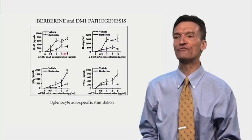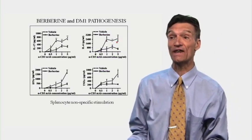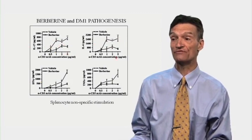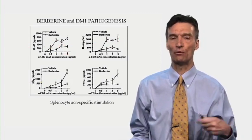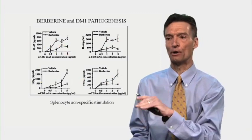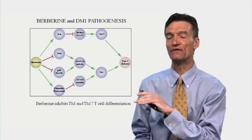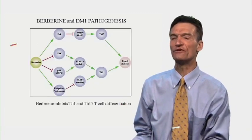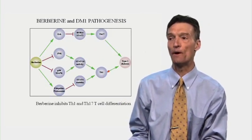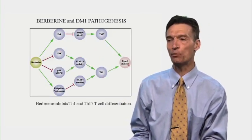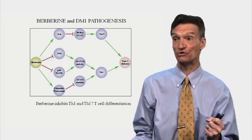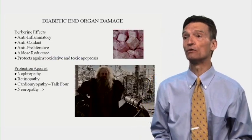The levels of inflammatory cytokines — IL-17, IL-6, interferon gamma, tumor necrosis factor alpha — were much greater in the control animals than the berberine-treated animals. Berberine was blunting the inflammatory response. Through a number of different pathways, berberine works to blunt Th17, blunt Th1, resulting in less type 1 diabetes, less autoimmune disease in general, and less cardiovascular disease in general.